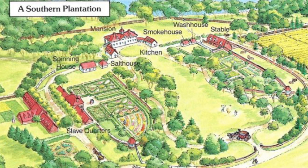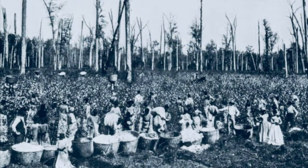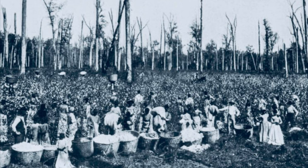Plantations were huge, and the climate of the South was ideal for growing those cash crops — hot, humid, and just perfect. So the crops were plentiful. Of course, with so many crops, many hands were needed to harvest them.